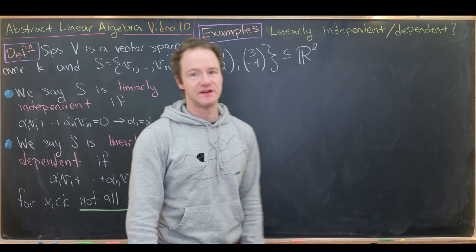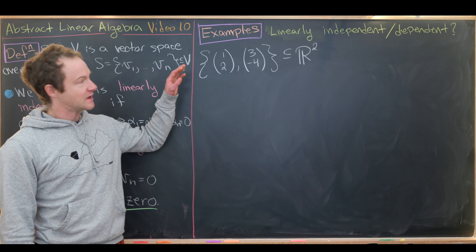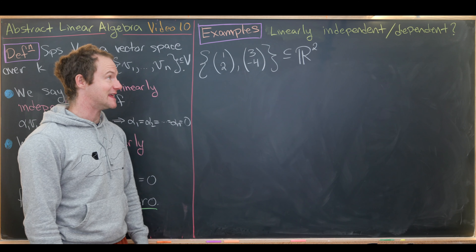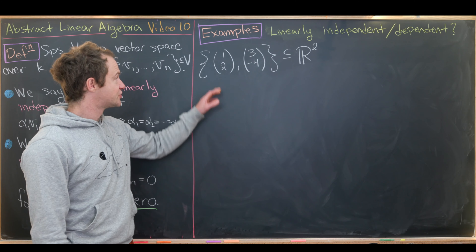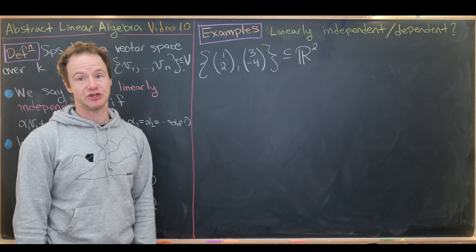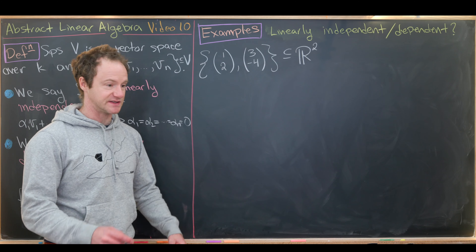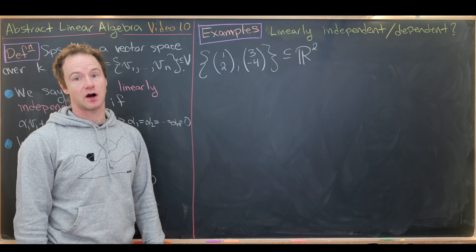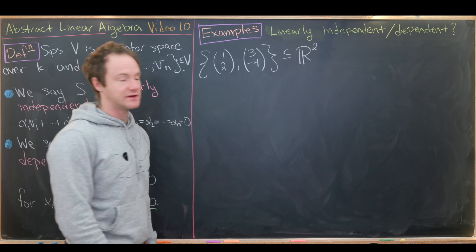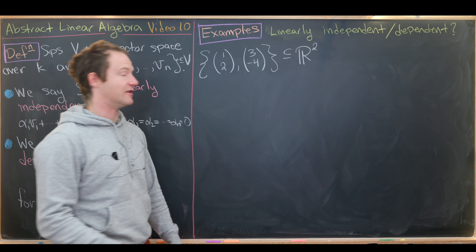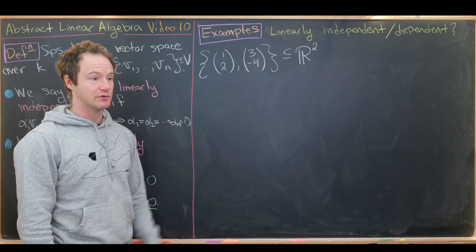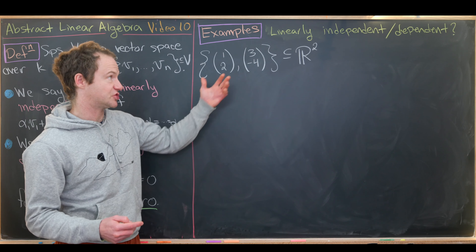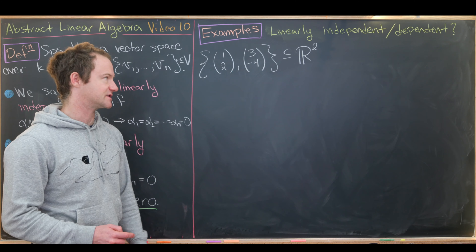Now let's look at examples to determine if some sets are linearly independent or linearly dependent, starting with a set of two vectors from R2. Recall that R2 is the set of all ordered pairs of real numbers, written here as columns. We'll take a linear combination of elements in the set, set it equal to zero, and see if the coefficients must be zero.